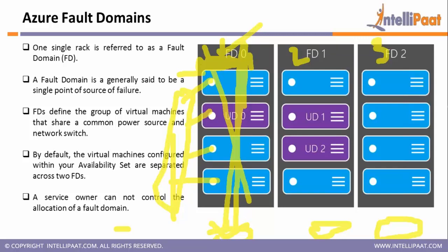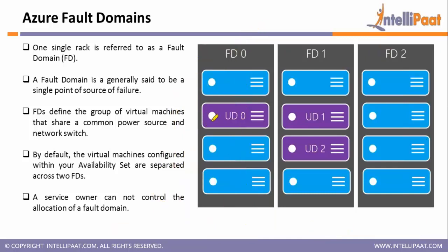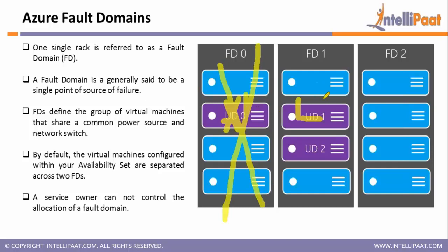Whenever you configure an availability set, your server will by default be hosted in two different fault domains — fault domain zero and fault domain one or two. In a load balancing setup, one server may be in fault domain one and another in fault domain two. If one of the fault domains — one rack — goes down, you are still able to access your services from the other fault domain, which is the other rack. Remember, you cannot control which fault domain is chosen — this is taken care of by Azure internally.